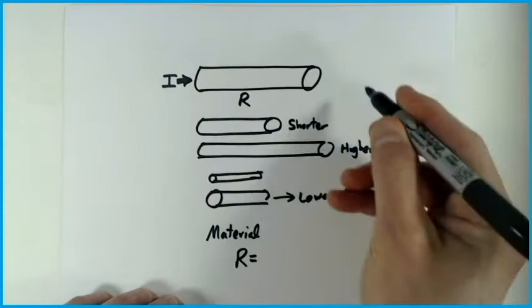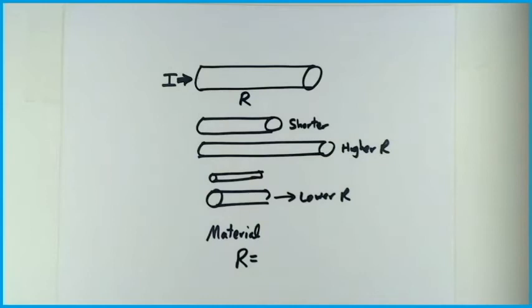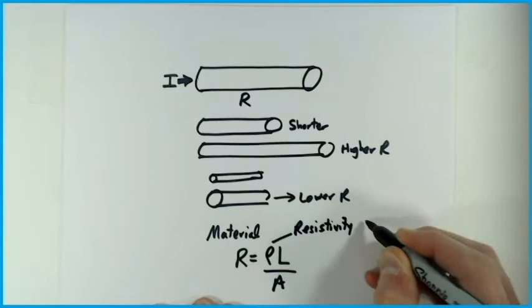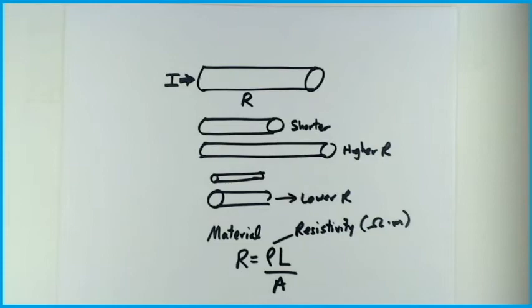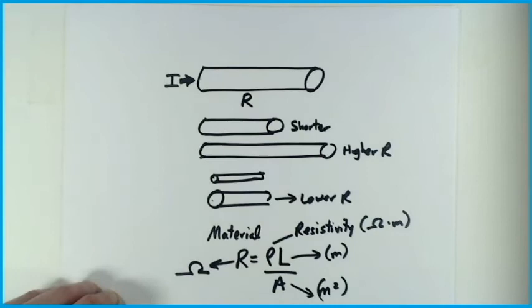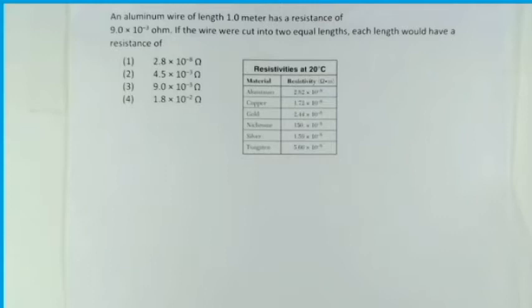The equation for resistance is very simple. Resistance depends on length, cross-sectional area, and material: R = ρL/A, where rho (ρ) is called the resistivity — not resistance — and is measured in ohm·meters. You can find this value on your reference table. Length (L) is in meters, cross-sectional area (A) is in meters squared, and resistance (R) is measured in ohms.